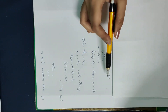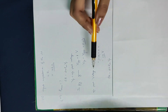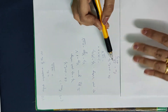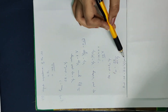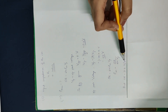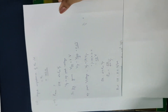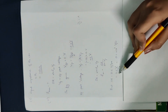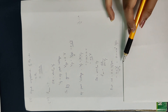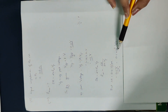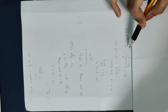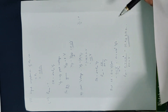Using the slew rate equation: slew rate equals 2π × Vp × Fmax, we solve for Fmax: Fmax equals slew rate divided by (2π × Vp). Substituting slew rate = 0.5 × 10⁶ V/s and Vp = 5 V, we can now calculate the maximum operating frequency.